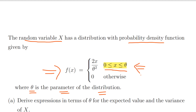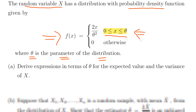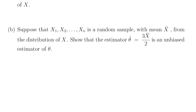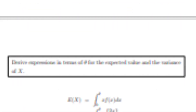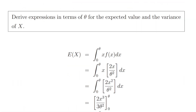Derive expressions in terms of theta for the expected value and the variance of x. Later on, we have a sample of values of x with a mean x bar from the distribution of x. Show that the estimator theta hat equals 3x bar divided by 2, and show that that estimator is an unbiased estimator of theta. So let's begin by looking at the expected value and the variance of x in terms of theta.